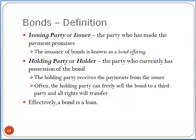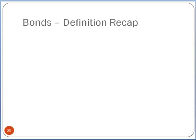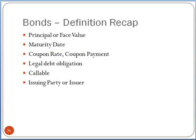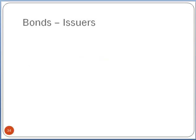You can think of a bond as essentially just a loan — there's a principal and an interest amount. So here's a quick recap of the definitions: there's a principal or face value, a maturity date, coupon rate, coupon payments. Bonds are legal debt obligations. They could be callable. There's the issuing party or the issuer, the bond offering, holding party, and so on.